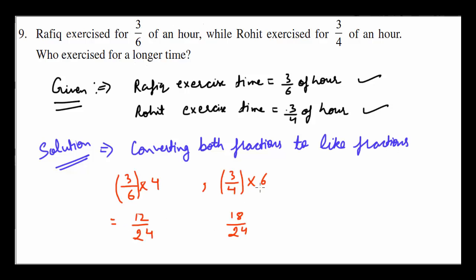3 over 6 into 4 gives 12 over 24. Similarly for Rohit, 18 over 24. So we can conclude 18 over 24 is greater. Therefore Rohit exercised for longer period of time. So this is how you have to do it.